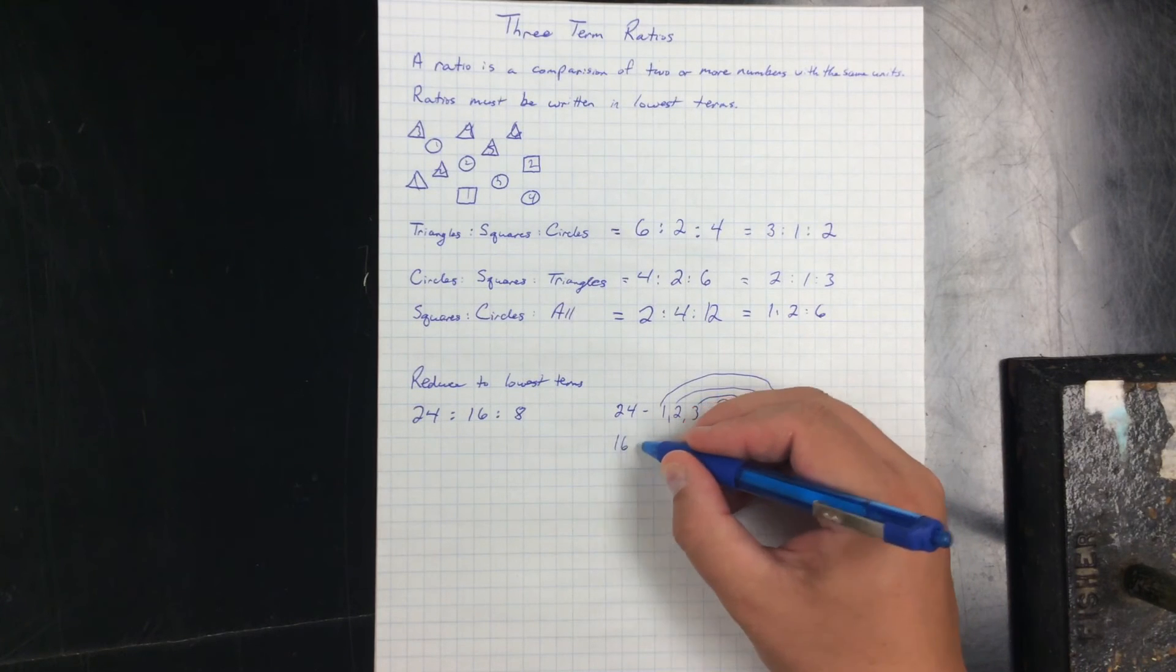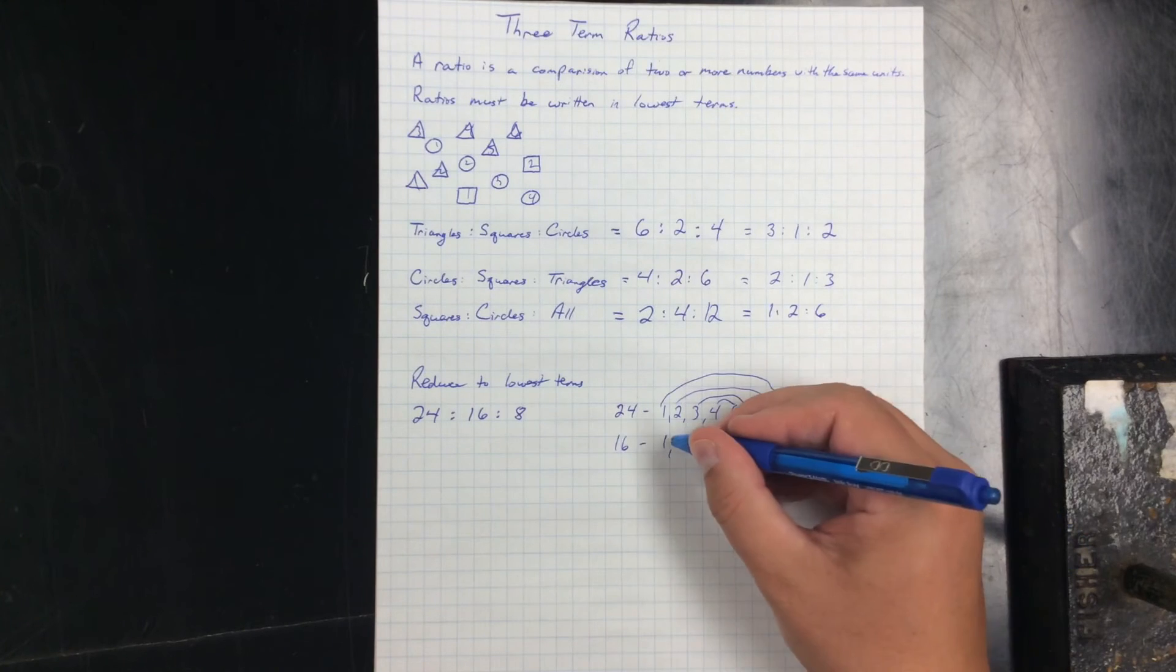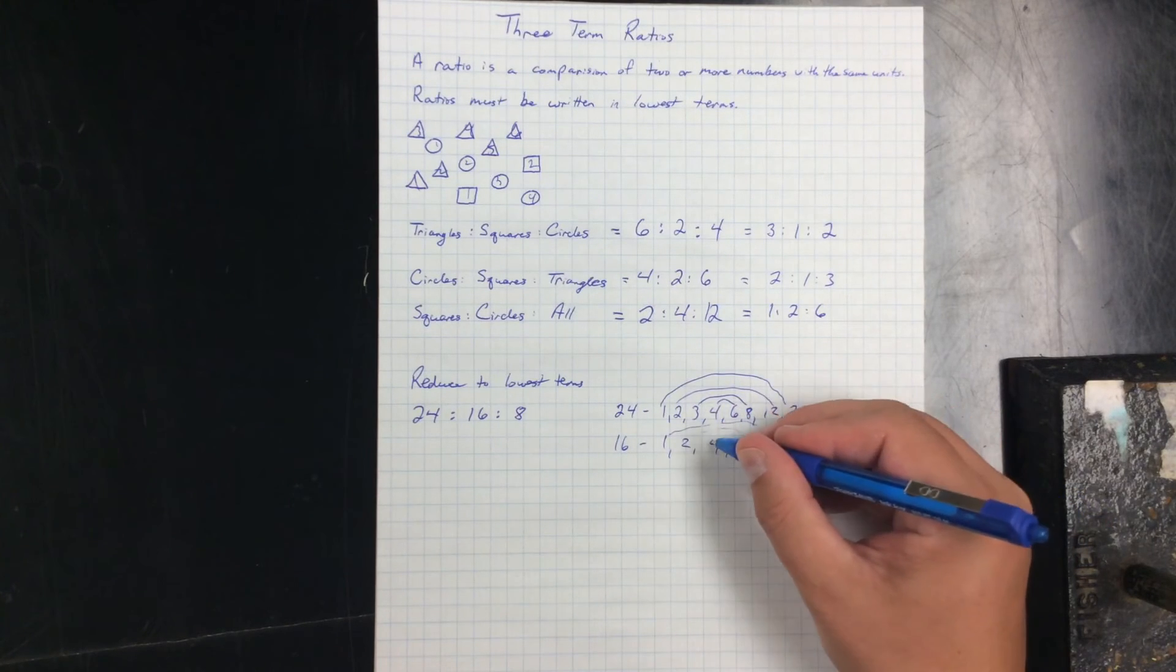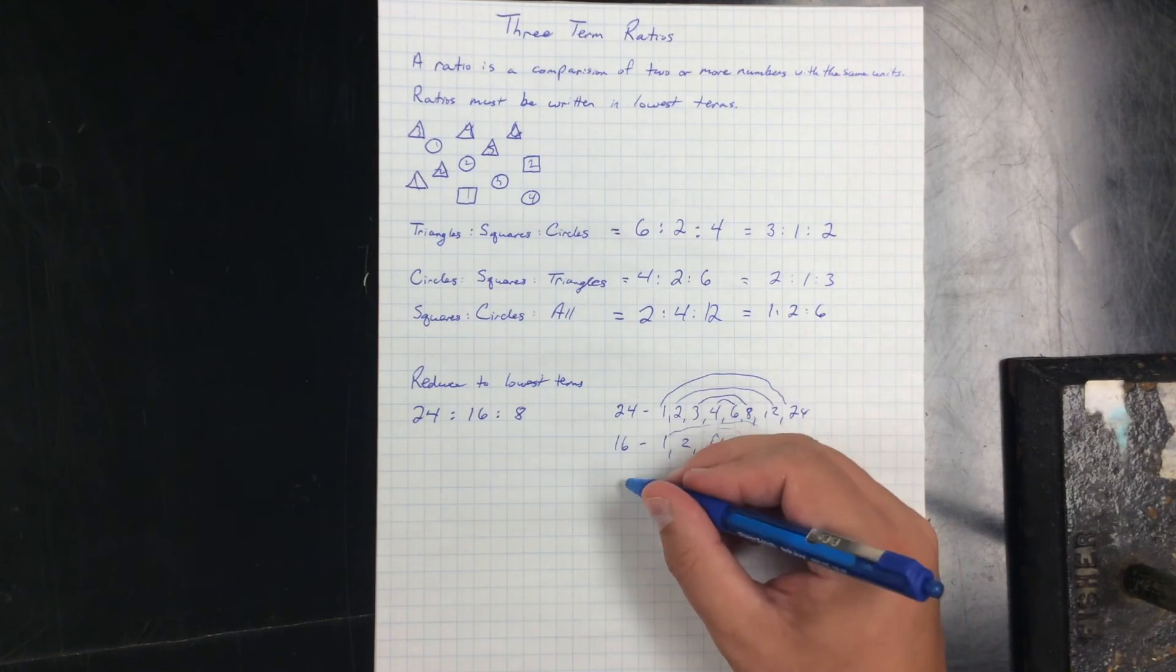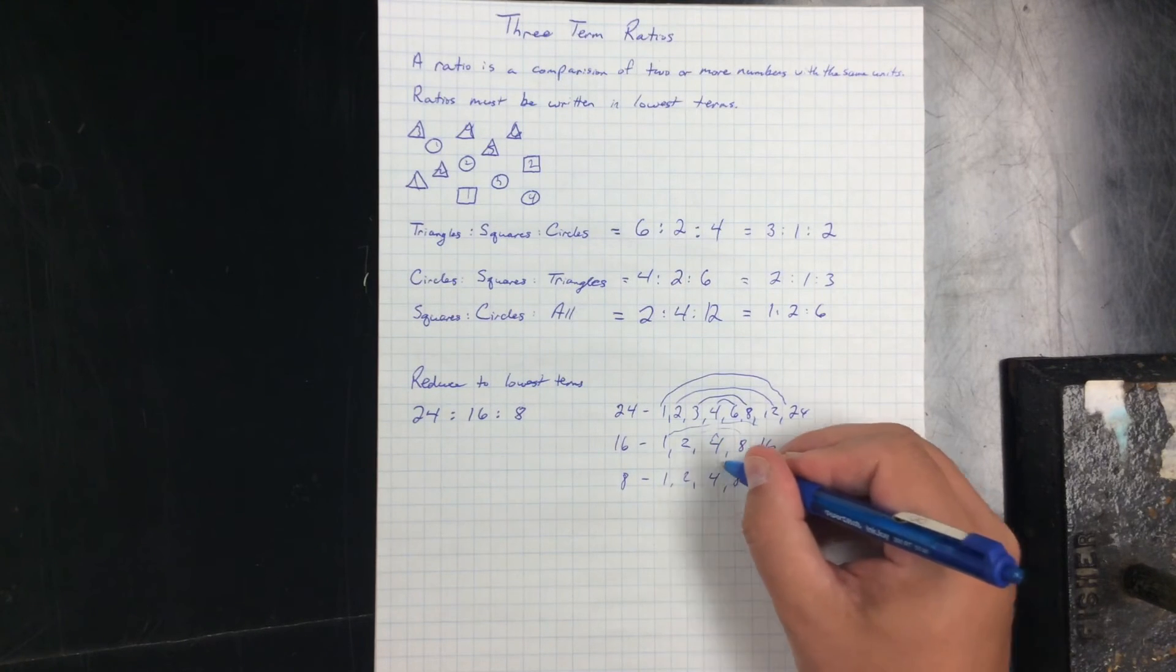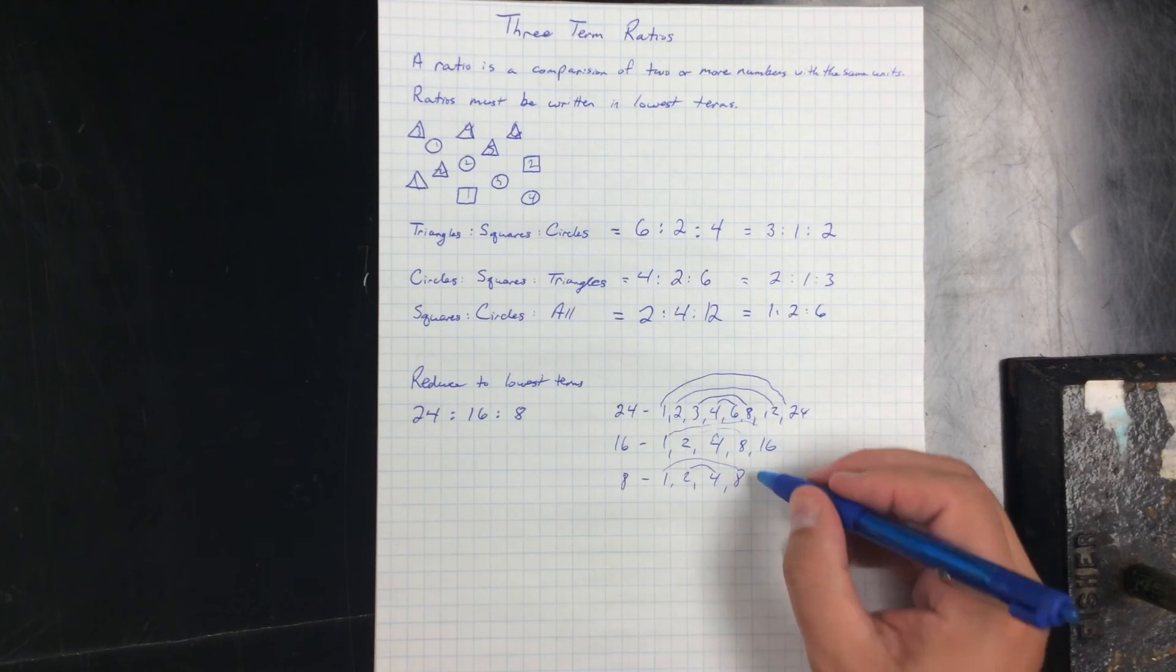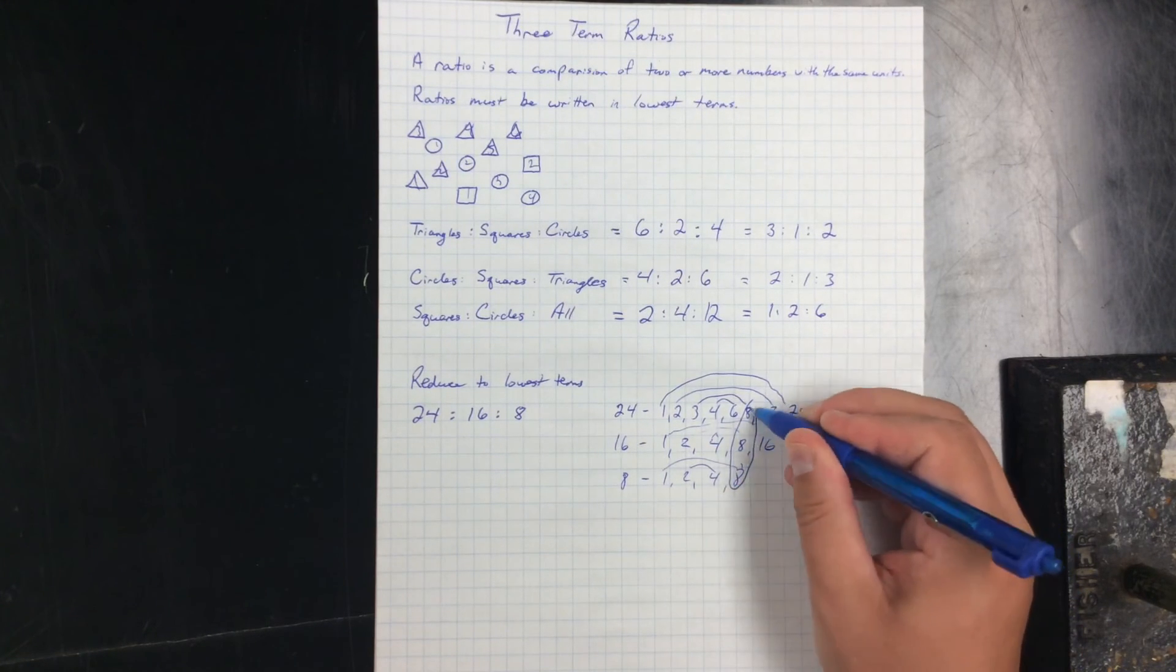What are the factors of 16? One, two, four, eight, and sixteen. One and sixteen, two and eight, and four by four. And eight, the factors are one, two, four, and eight. Got them all. When I look through my factor list, the largest number that repeats in all three is eight. So that's my greatest common factor.